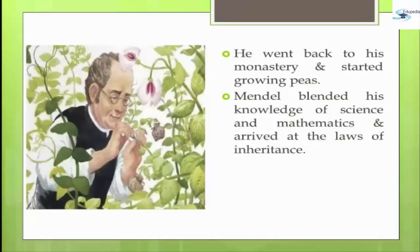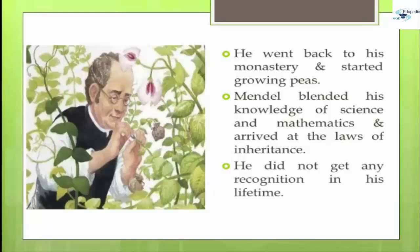While Mendel's research was with plants, the basic underlying principles of heredity that he discovered also apply to people and other animals, because the mechanisms of heredity are essentially the same for all complex life forms. Mendel did not get any recognition in his lifetime, but his interest in genetics remained alive. He died in the year 1884 with a kidney disorder.